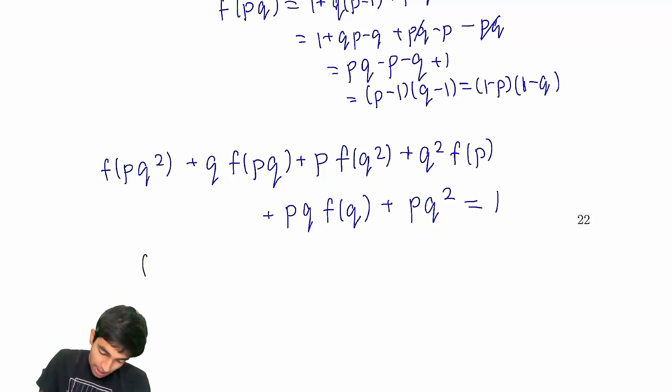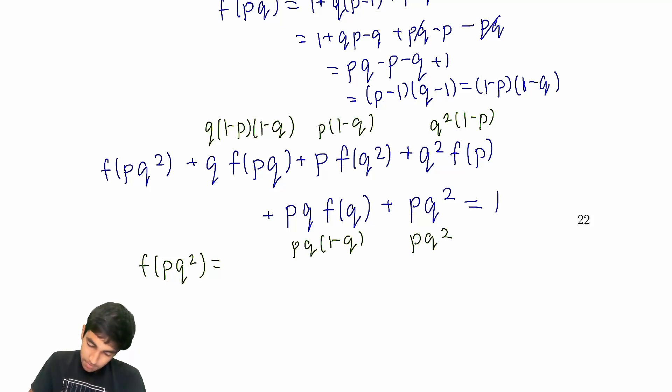And, now we just solve here. We have f of pq² is... Okay, so this thingy is just going to be q... And, we'll actually notice some really nice cancellation here, I think. Right? f of q² is p(1-q). This thingy is q²(1-p). pq(1-q). pq². Hmm. Never mind. The cancellation is not as simple as I thought it would be. But, I think it should be still... Okay. Yeah. So,